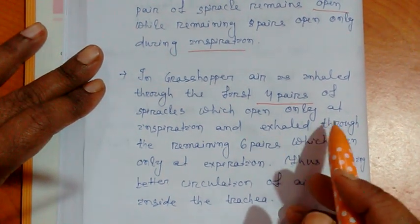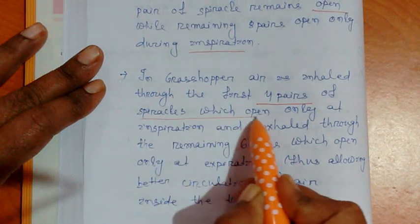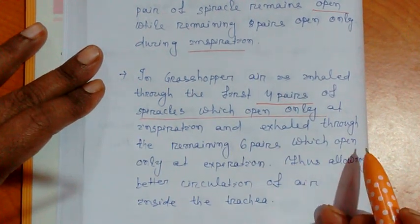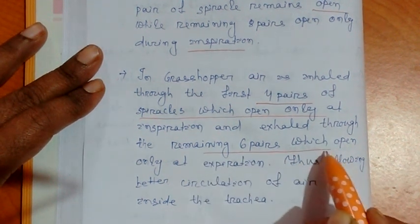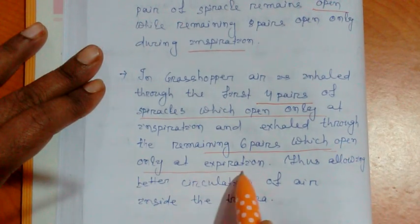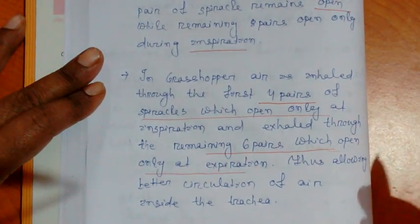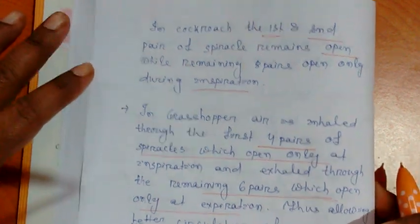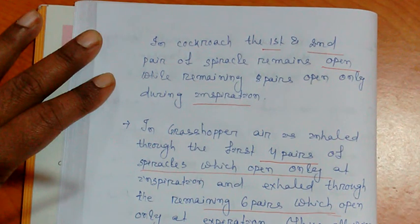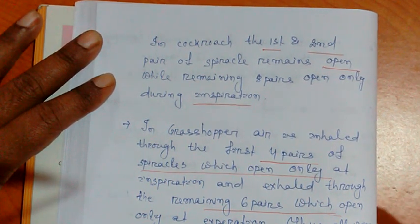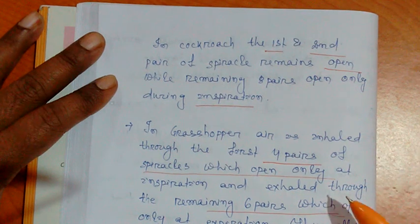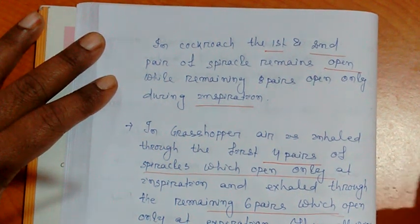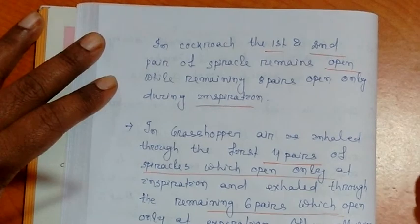In grasshopper, the first four pairs of spiracles open during inspiration, and air is exhaled through the remaining six pairs which open only at expiration. Both cockroach and grasshopper have ten pairs of spiracles. In cockroach, the two pairs in the thorax always remain open, while in grasshopper the four anterior pairs open during inspiration and close afterwards.